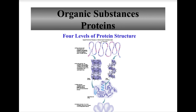Functions of protein include: structural proteins such as keratin in hair, nails, and skin; transport proteins such as hemoglobin which transports oxygen in red blood cells; chemical messengers such as protein-based hormones and neurotransmitters; proteins for movement such as actin and myosin in muscles; proteins for defense called antibodies in immunity; and enzymes — biological catalysts that speed up chemical reactions without being consumed, by lowering the activation energy barrier.